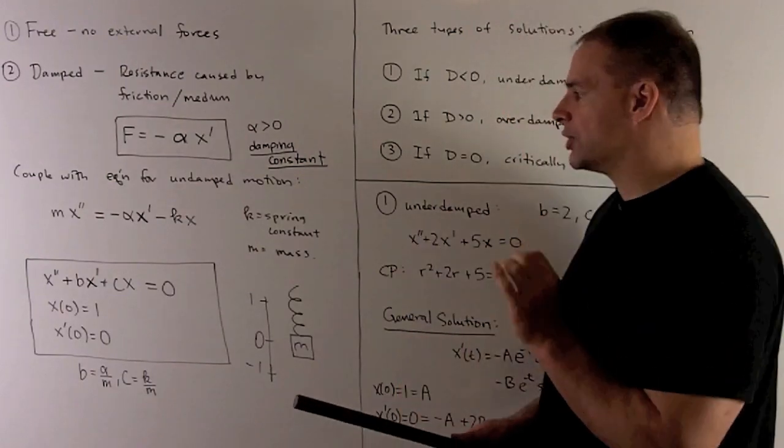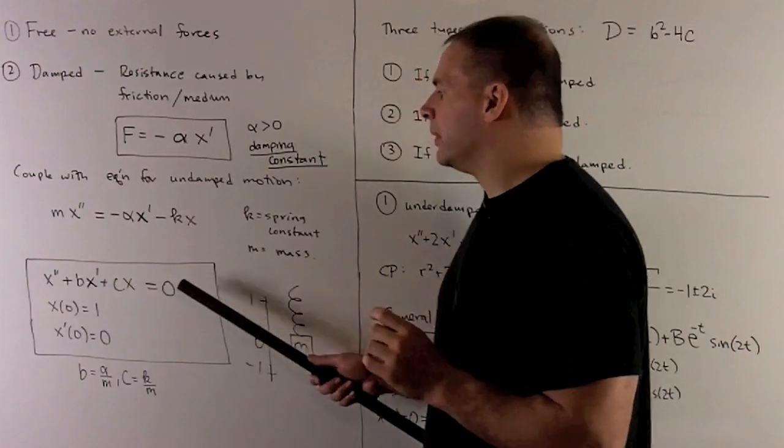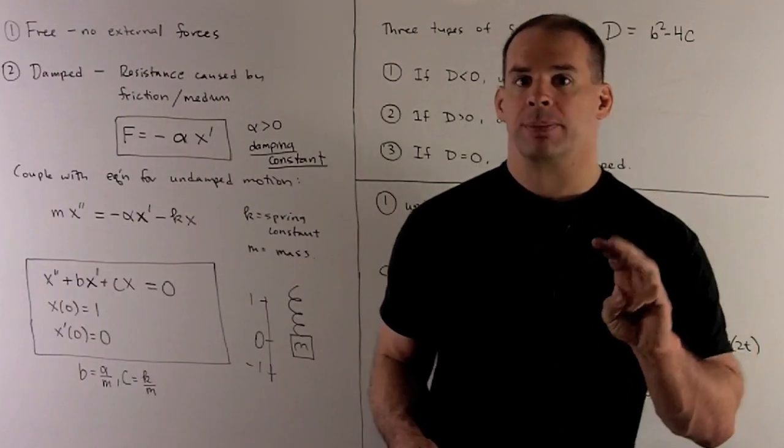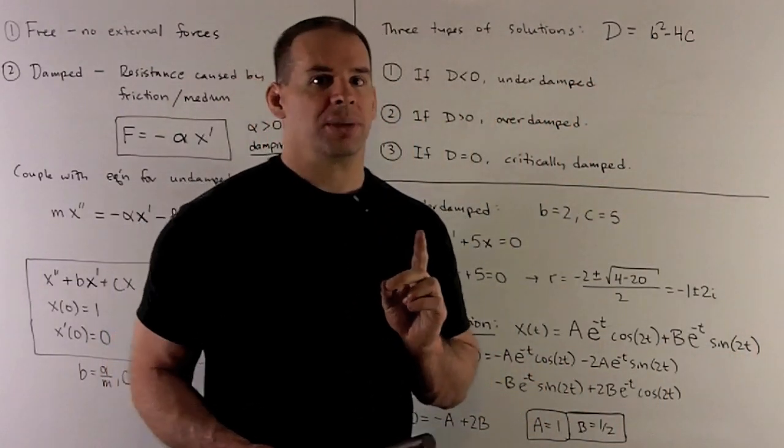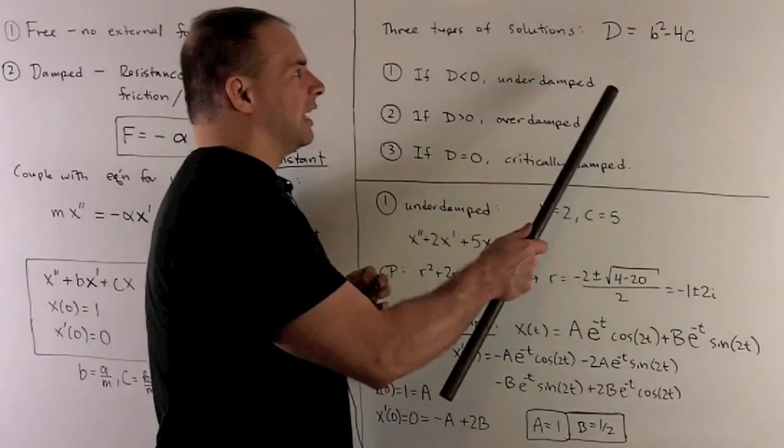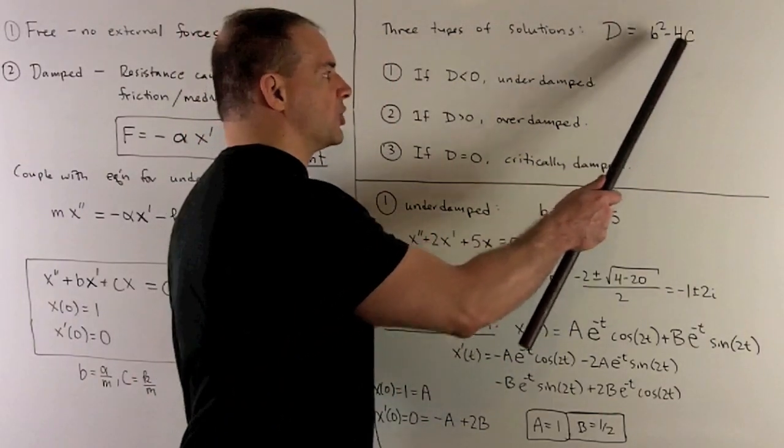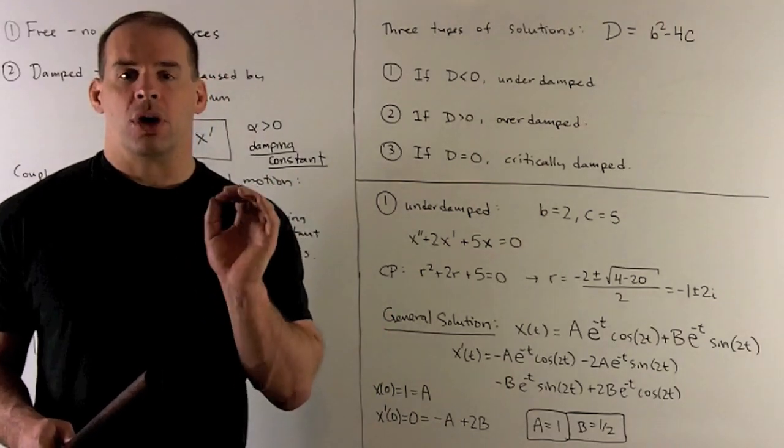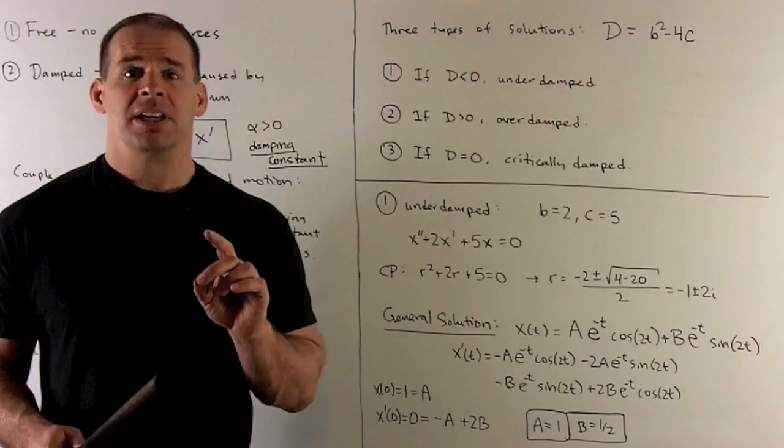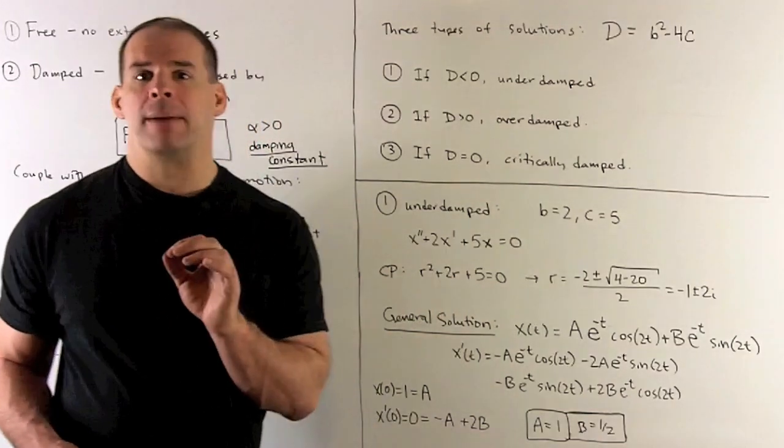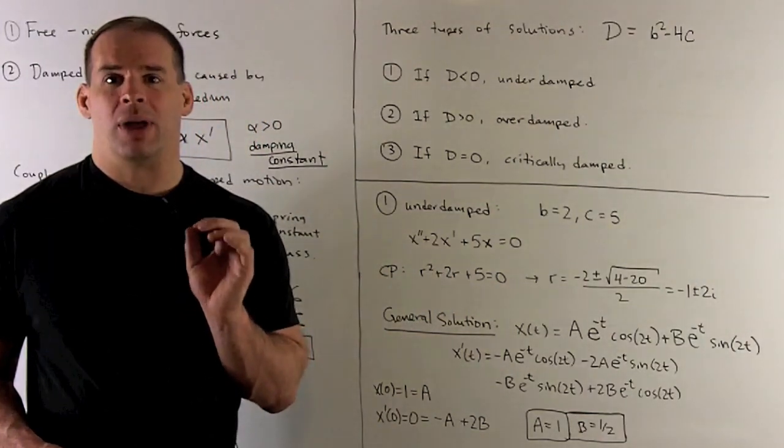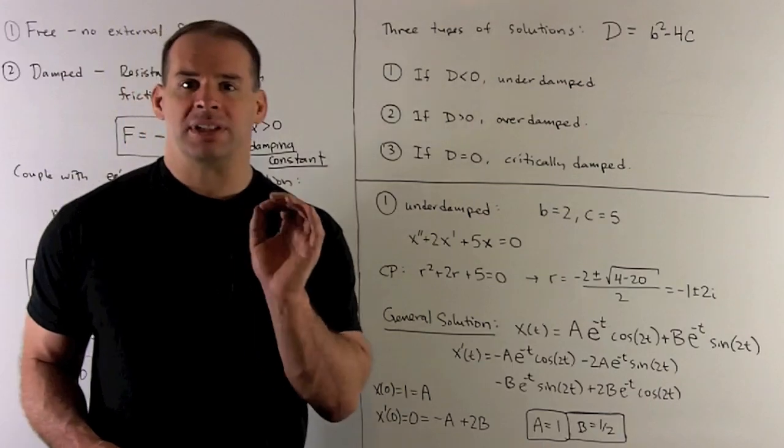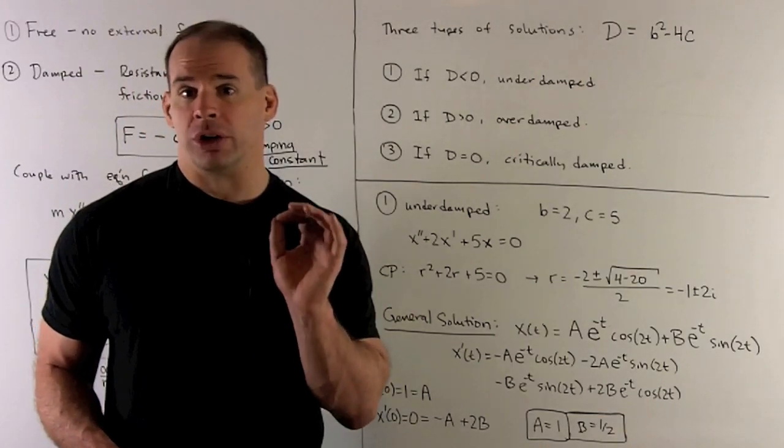Now, the characteristic equation for the ODE is going to determine what kind of solution that we get. So there are going to be three cases. So what we'll do is, we're going to take capital D equal to B squared minus 4C. If D is negative, we're going to call our system underdamped. If D is positive, it'll be overdamped. And if D is equal to zero, we'll have critically damped. So for this video, we're going to take a look at what happens when we're underdamped.